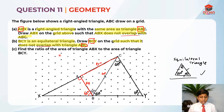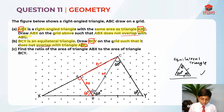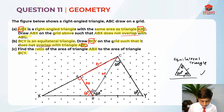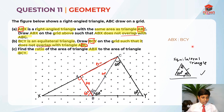Now let's move on to part C. Find the ratio of the area of triangle ABX to the area of triangle BCY. So we need to find the ratio: ABX is to BCY.